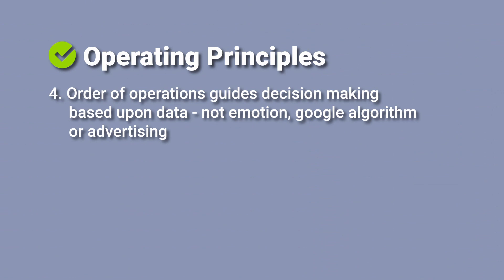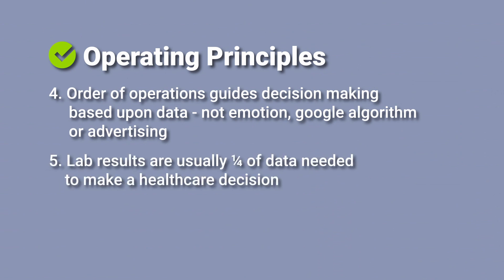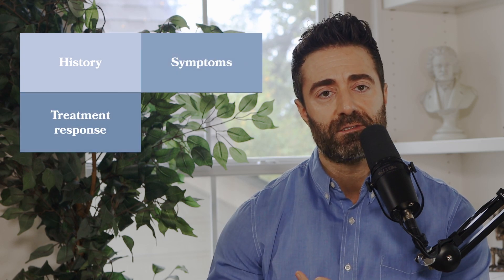One thing I'd like to point to from these past examples is that labs were only helpful for a small number of those cases. This brings us to principle five: lab results are usually one-fourth of the data needed to make a healthcare decision. We personalize care based upon four things predominantly — history, symptoms, treatment response, and lab work. Labs do have a time and a place, but they should not be looked at as the preeminent guiding factor, but rather one-fourth of the information needed in addition to a lot of information about you as a person.